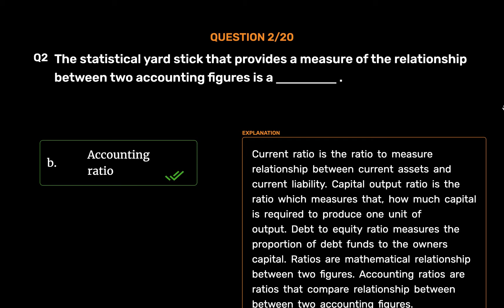Current Ratio measures the relationship between current assets and current liability. Capital Output Ratio measures how much capital is required to produce one unit of output. Debt to Equity Ratio measures the proportion of debt funds to the owner's capital. Ratios are mathematical relationships between two figures, and Accounting Ratios compare relationships between two accounting figures.